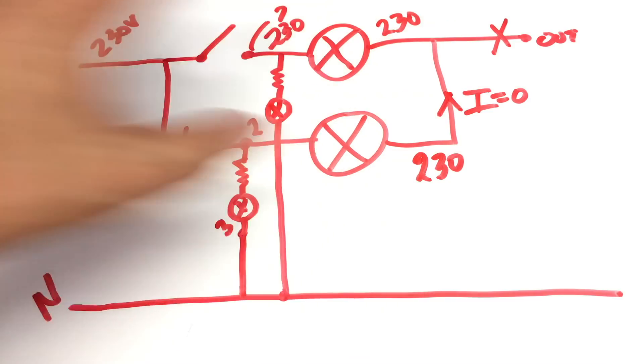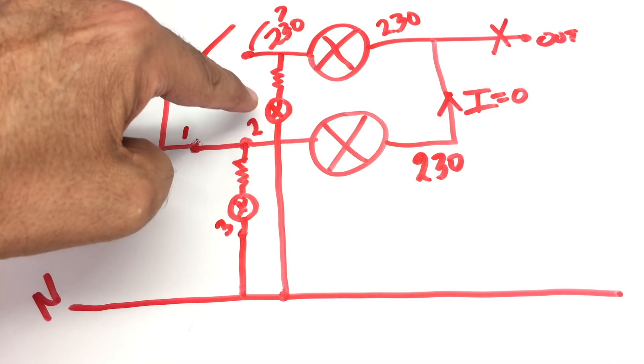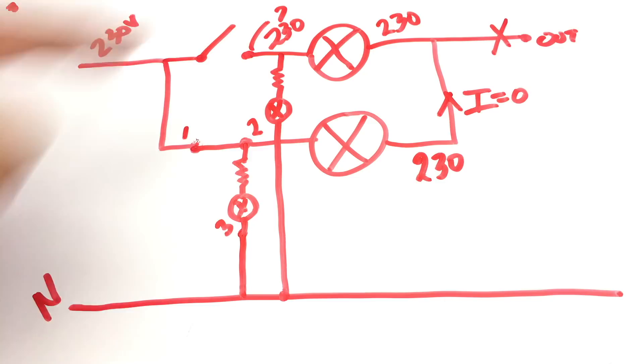So according to the logic, that lamp should glow. And it doesn't when that switch is off. That does not glow. And that is the question.